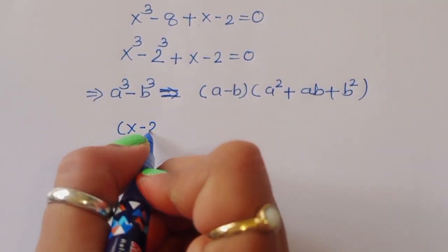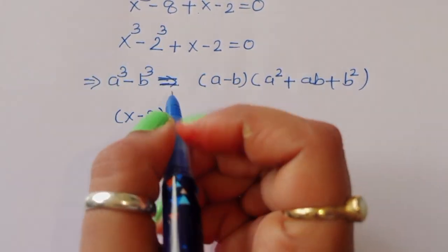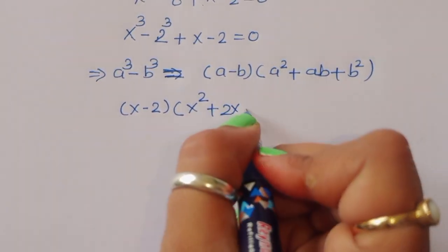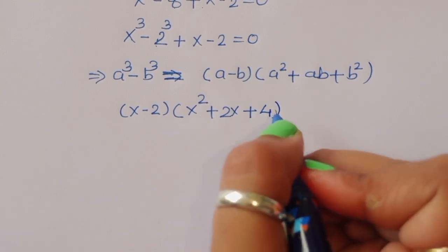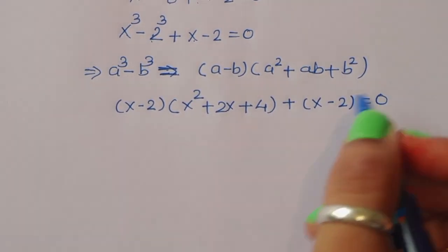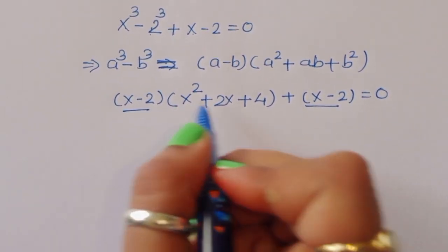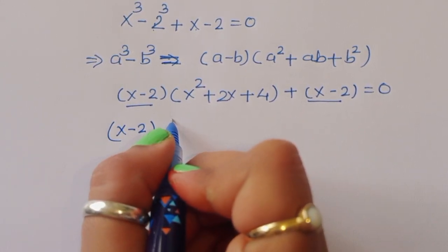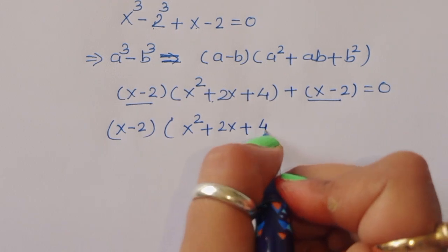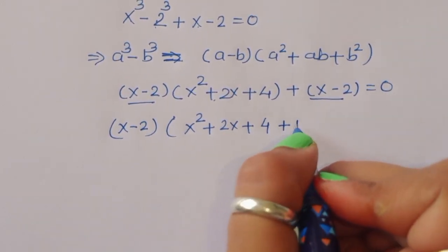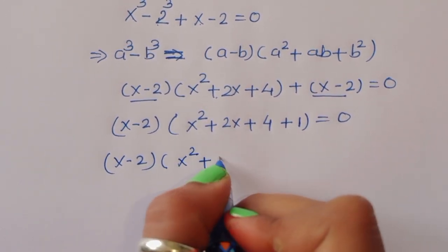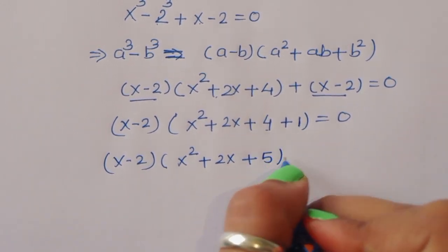Applying this formula: we get x minus 2, times x squared plus 2x plus 4, plus x minus 2 equals 0. We can take x minus 2 as common, leaving x squared plus 2x plus 4 plus 1, so x minus 2 times x squared plus 2x plus 5 is equal to 0.